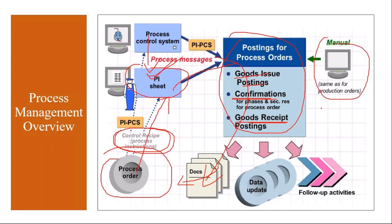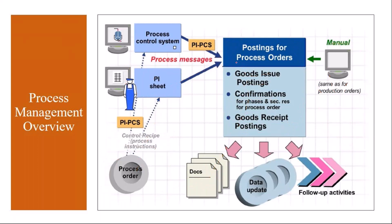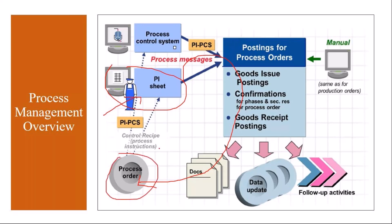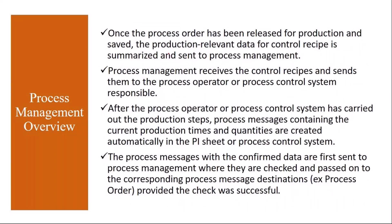The user will not do any manual activities — like goods issue via MIGO, process order confirmation via COR6N, or production goods receipt via MIGO. Instead of these manual activities, you give a screen called the PA sheet where the user inputs all actual production data, and that comes and gets updated in the process order. It is a two-way flow: you send process order information to the process control system and receive actual production data back.